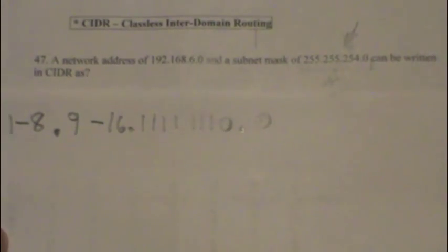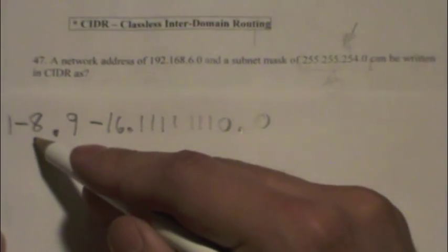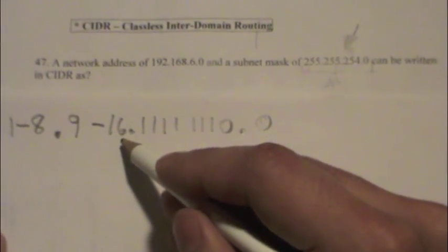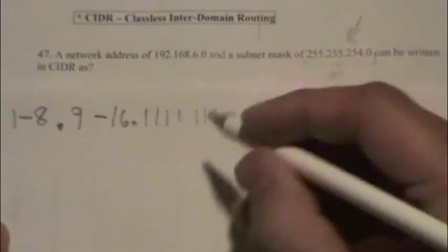And it looks like the last octet is also zero. So all we have to do is count the ones now. So we know that bits 1 through 8, 9 through 16 are ones. So we have 17, 18, 19, 20, 21, 22, 23.